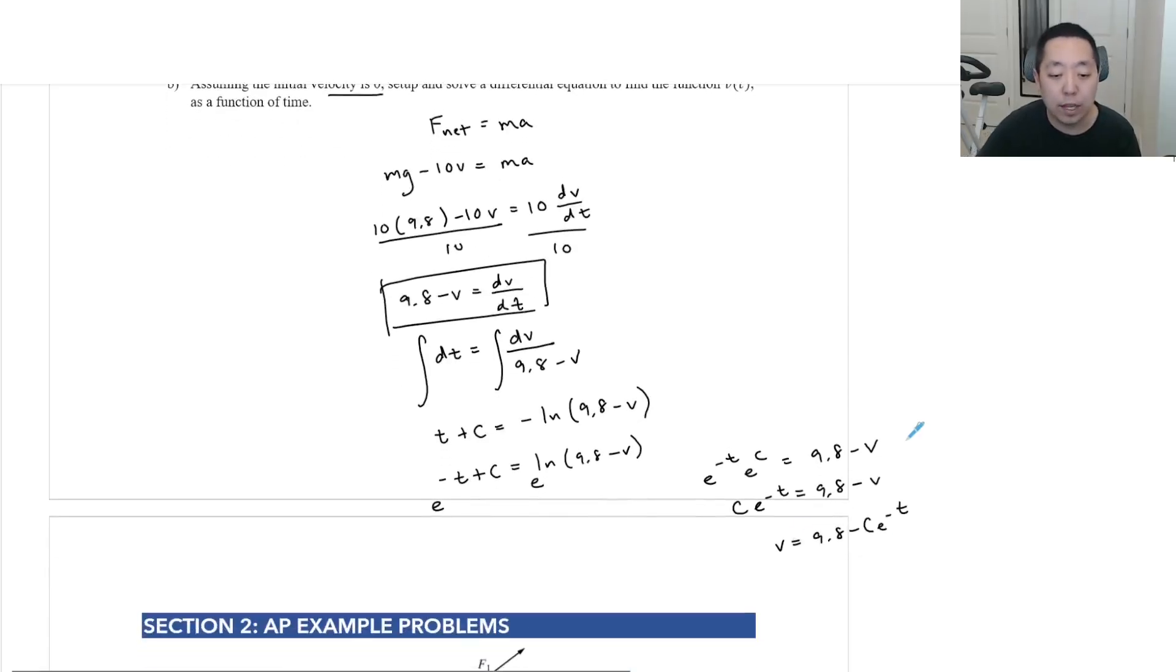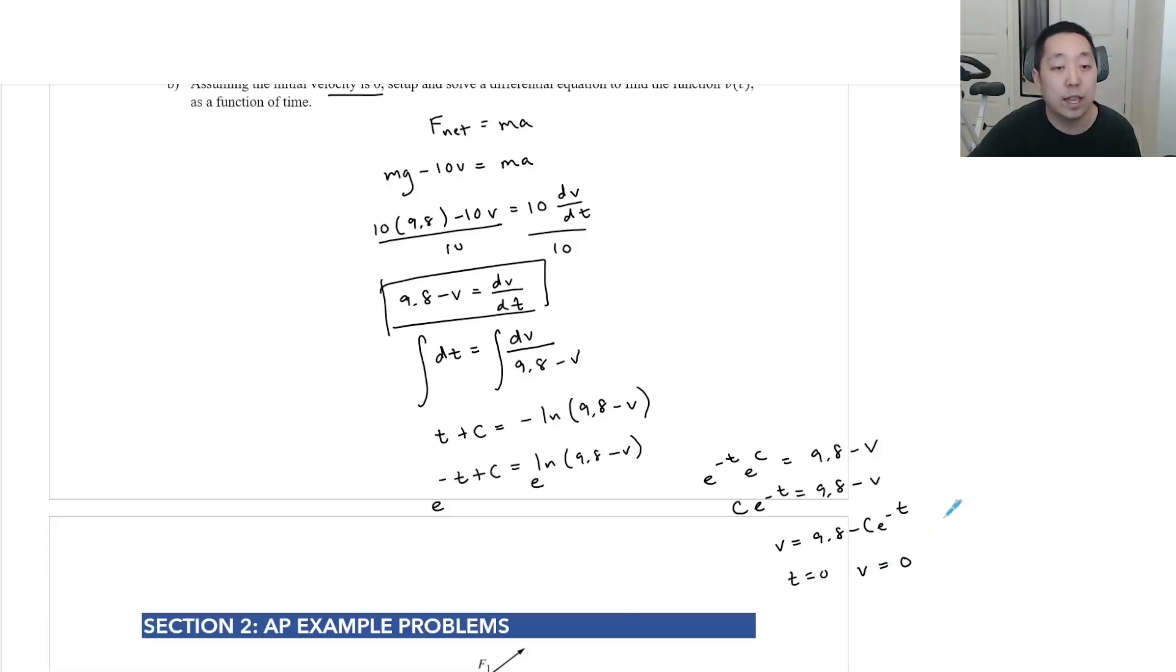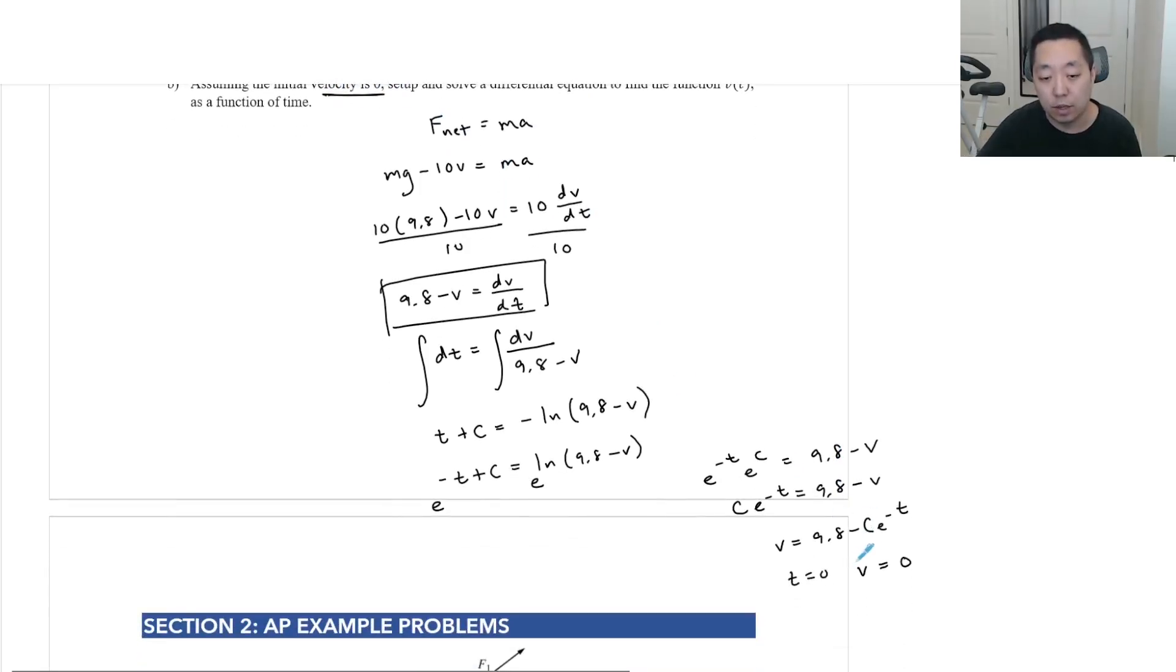And we know that at time t equals zero, we need v is equal to zero, because we say that initially, the velocity is zero. So time zero, the velocity is zero. So that means v is equal to 9.8 minus c e to the zero, equals zero. So 9.8 minus c is equal to zero, or c is equal to 9.8. And therefore, our ultimate equation is v equals 9.8 minus 9.8 e to the negative t. And that's it. That's our solution there.